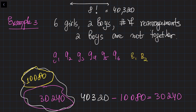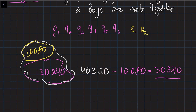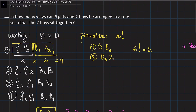So the number of cases where the two boys are not together is 30,240. There are only two possibilities: either the two boys are always together, or they are not together. Both cases together account for all 40,320 total arrangements. Sometimes it's easier to find the number of cases where boys are together and subtract from the total. This problem illustrates the two important rules of combinatorial analysis: the counting rule and the permutation rule.